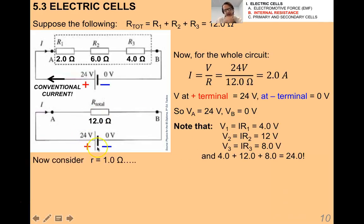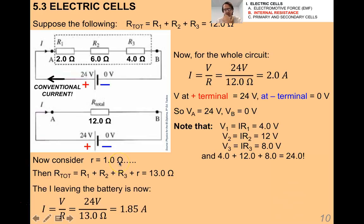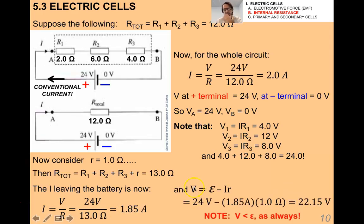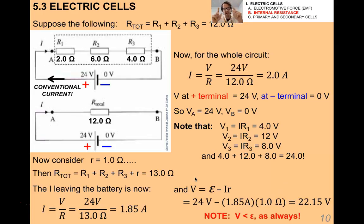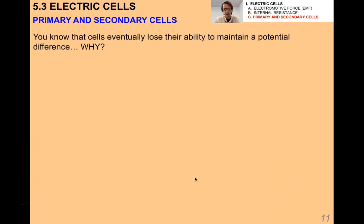If the battery has an internal resistance of 1 ohm, the total resistance becomes 13 ohms. The current leaving the battery is now a little less. Using V = ε − Ir, we get a terminal voltage of 22.15 volts, while the EMF — the voltage rating — is 24 volts. Note that V is always less than ε, as it always must be. That's an example of using little r in a circuit.